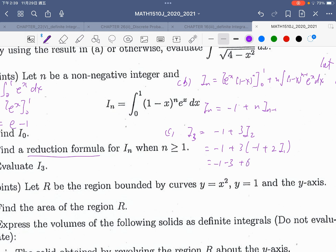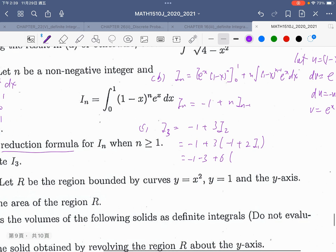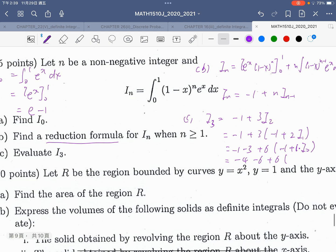I_1, and I_1 is equal to, I use reduction again, minus 1 plus 1, I_0 minus 4. I_0 equals e minus 1.